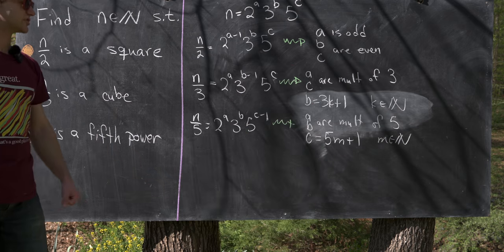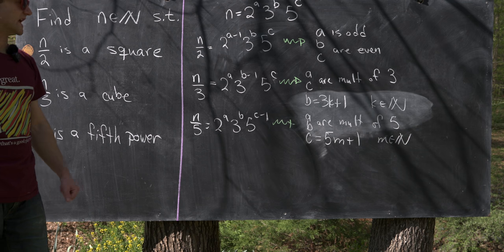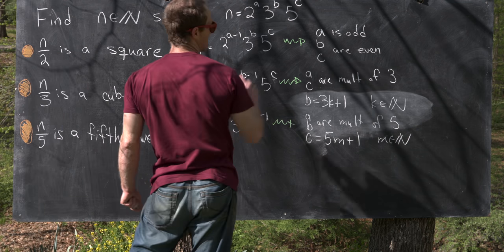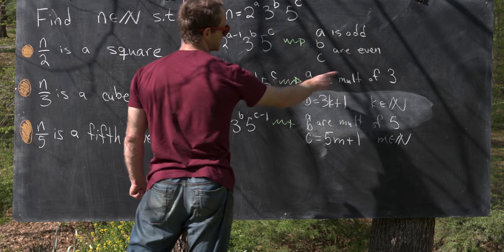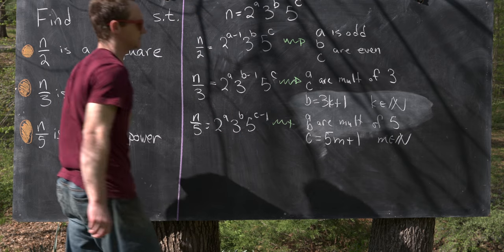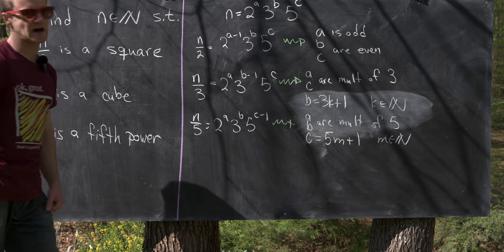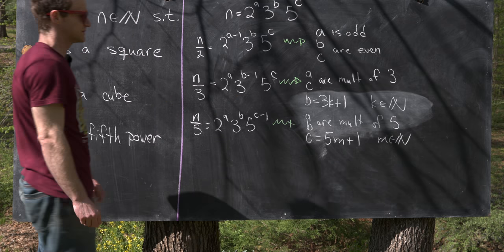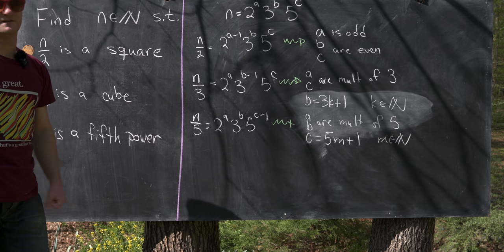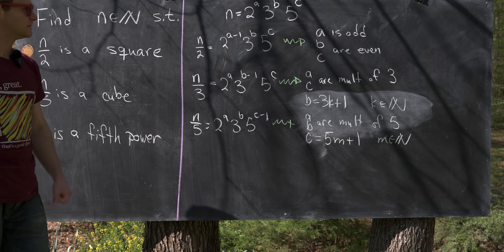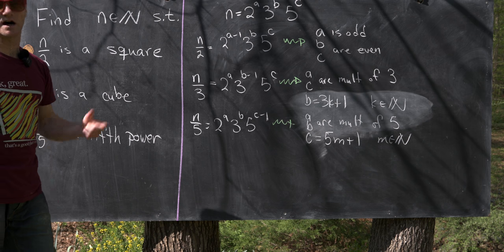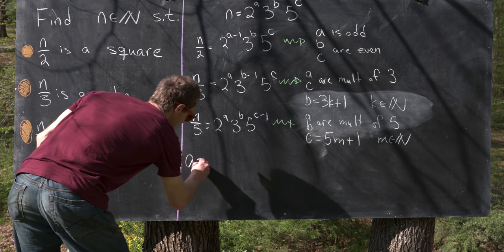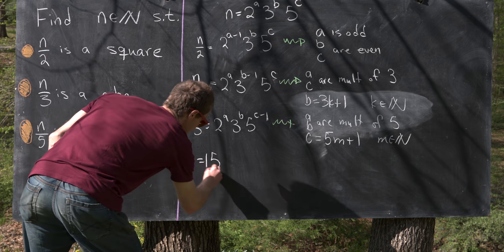Now we just start to pick off how to choose a, b, and c. Notice that a must be odd, it must be a multiple of three, and it must be a multiple of five. The fact that it's a multiple of three and a multiple of five means it's a multiple of fifteen. But fifteen is already odd, so we can use a equals fifteen.